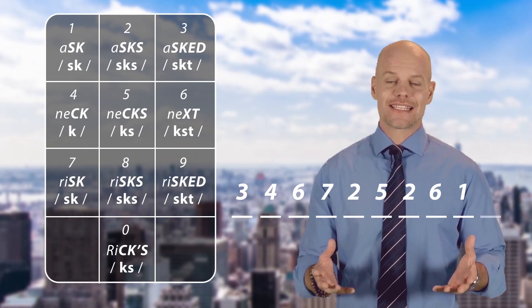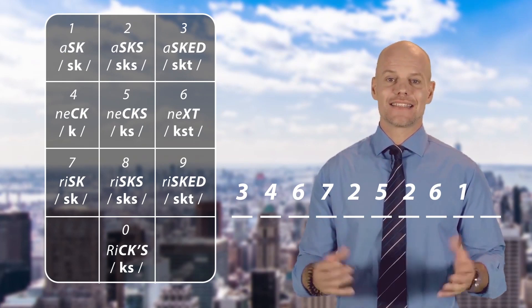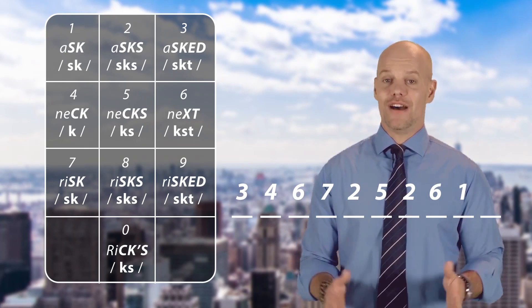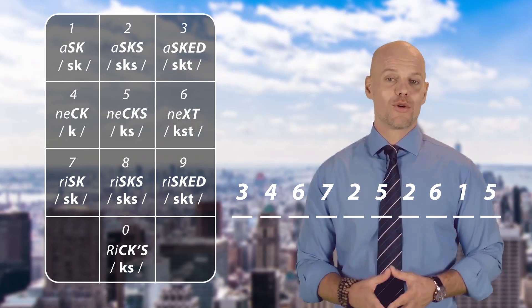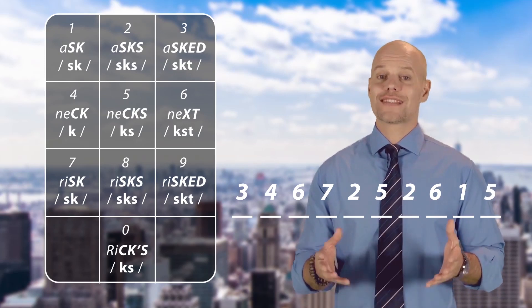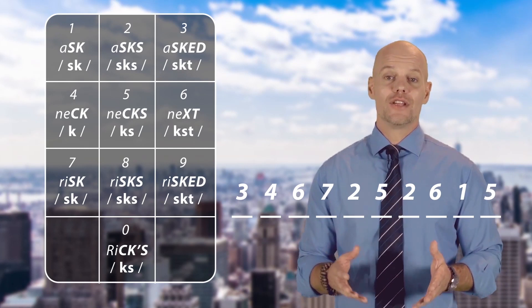Next one is next. Number 6. Next is ask. Ask. Number 1. And the last one is necks. Necks. This is number 5. So the phone number was 3-4-6-7-2-5-2-6-1-5.